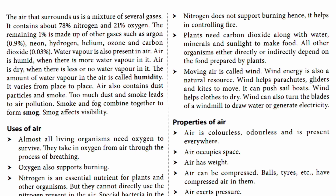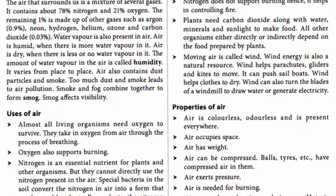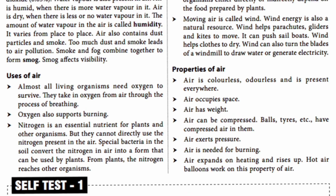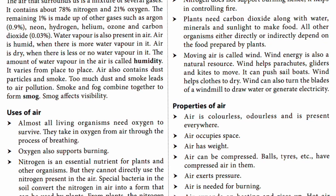Air also consists of dust particles and smoke. Too much dust and smoke leads to air pollution. Smoke and dust combine to form smog, which affects visibility. Almost all living organisms need oxygen to survive — they take in oxygen from the air through breathing. Oxygen also supports burning. Nitrogen is an essential nutrient for plants and other organisms, but they cannot take nitrogen directly from the air. Special bacteria in the soil converts nitrogen into a form that can be used by plants. Nitrogen does not support burning, so it helps control fire.